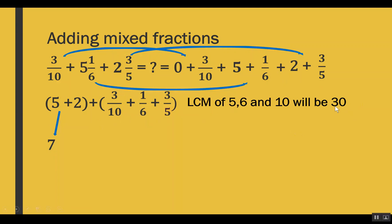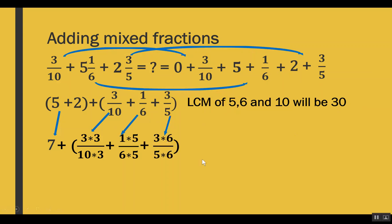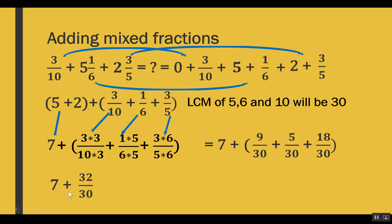We make each fraction with denominator 30. For 3 out of 10, to make 10 into 30, we multiply numerator and denominator by 3. For 1 out of 6, to make 6 into 30, we multiply numerator and denominator by 5. For 3 out of 5, to make 5 into 30, we multiply numerator and denominator by 6. After multiplication we get 9 out of 30, 5 out of 30, and 18 out of 30. Adding all numerators: 9 plus 5 plus 18 equals 32, giving us 32 out of 30.